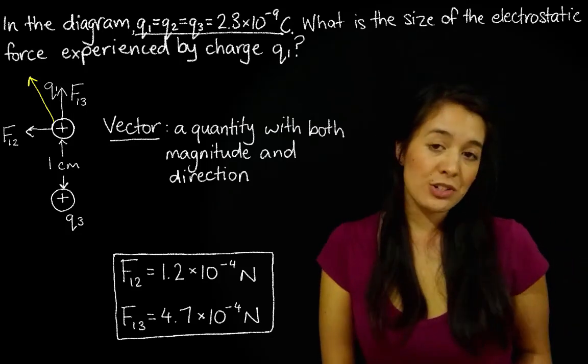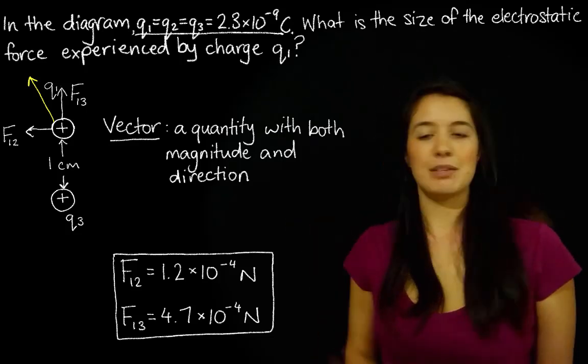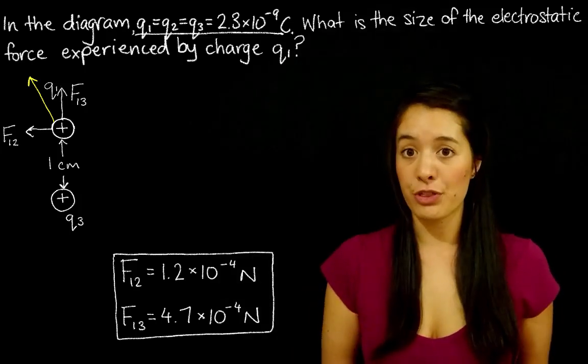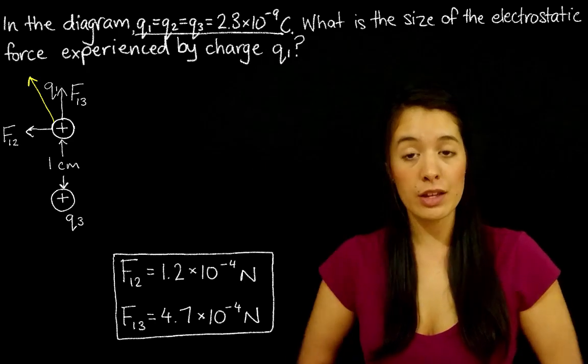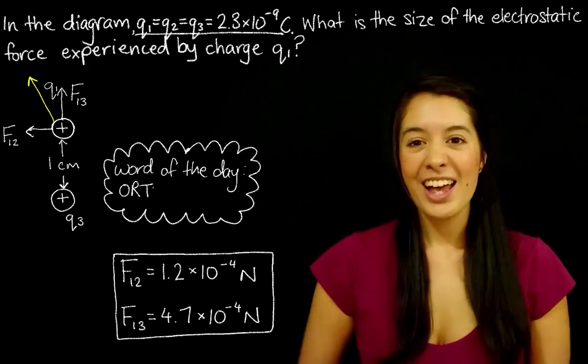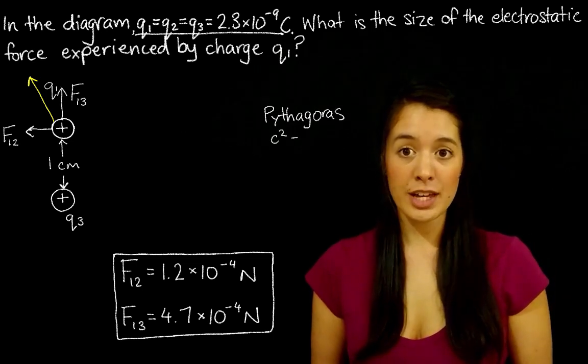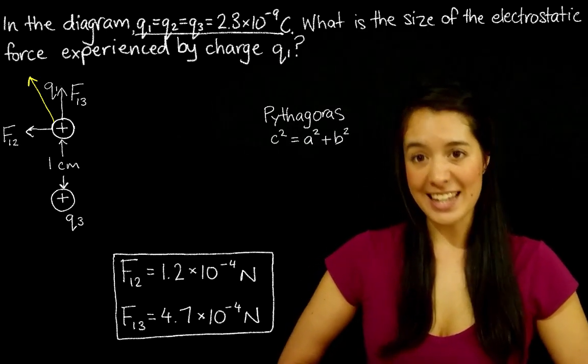So if you already know how to do vector addition, or you can't be bothered finding out, let's keep going. So because our vectors F12 and F13 are at right angles to one another, or orthogonal, we can add them using Pythagoras. C squared equals A squared plus B squared. You'll see what I mean in a sec.